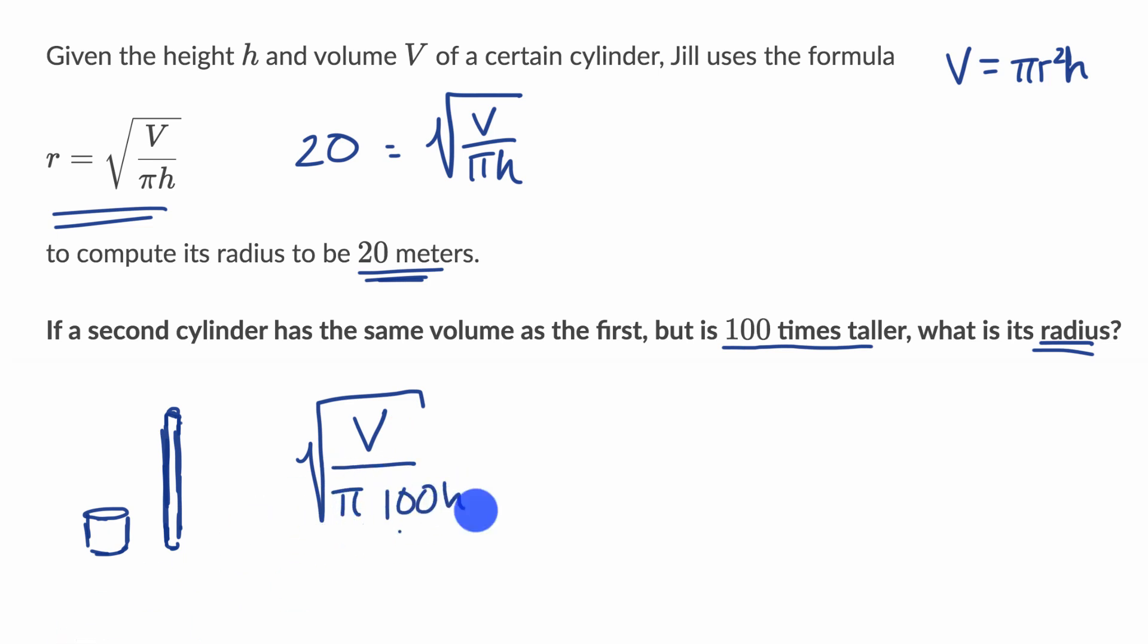What's another way to write this? Well, I'm going to try to bring out the 100 so I still get the square root of V over pi h. So I could rewrite this as the square root of 1 over 100 times V over pi h, which I could write as the square root of 1 over 100, using properties of radicals, times the square root of V over pi h.